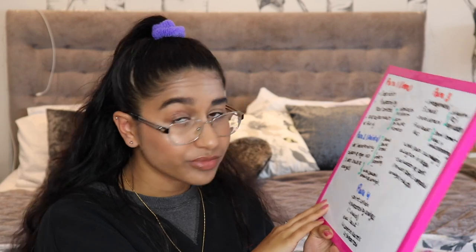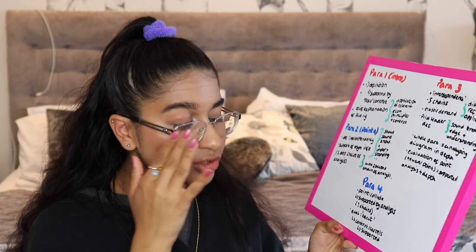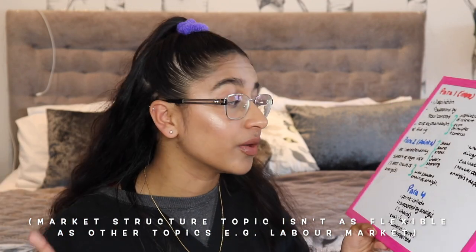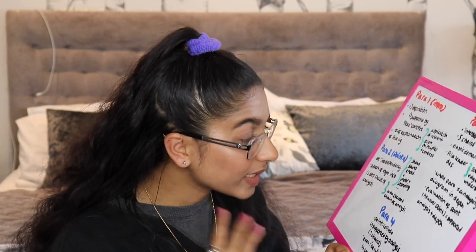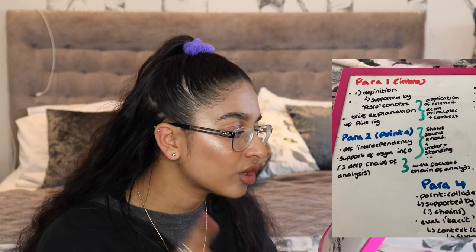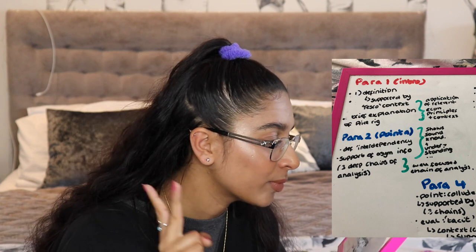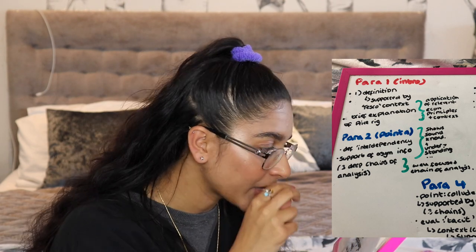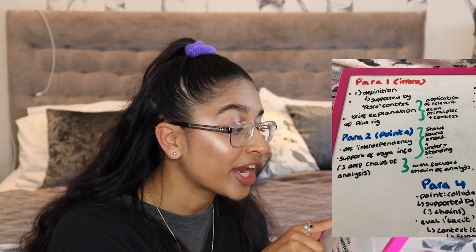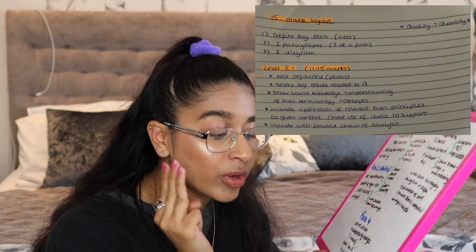I've explained asymmetric information, what it is exactly in context, and how it affects the oligopoly — going in a lot of depth in that paragraph. For paragraph two on my whiteboard: I defined interdependency, supported it with asymmetric information, and had three deep chains of analysis. Unlike the recession plan where I had eight or nine points per paragraph, here I have three really deep chains of analysis. Linking to the mark scheme, this shows sound knowledge and understanding of economic concepts and hits well-focused chains of analysis.